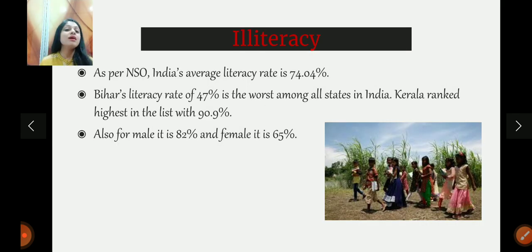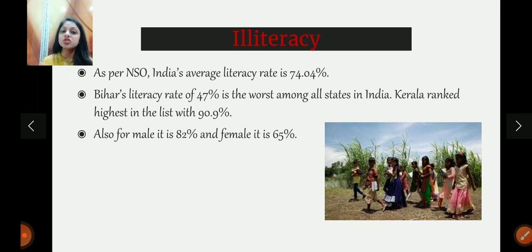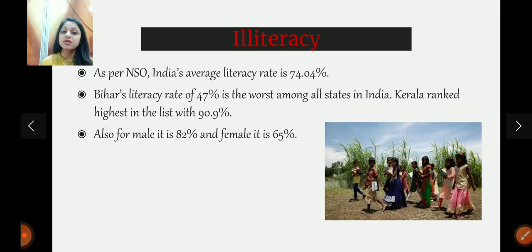Then comes illiteracy. First understand the difference between illiteracy and education. Illiteracy refers to the capability to read and write — this is the very basic necessity that almost every person should have. India's average literacy rate is 74%, meaning 74% of the population can read and write. That also means 26% of the population cannot even read and write, which is not a good thing. Moreover, within that 74%, there are significant variations. For example, interstate variations: Bihar's literacy rate is 47%, while Kerala's is 90%. There are also gender variations — the male literacy rate is 82% while the female literacy rate is 65%. This is not a good picture, as a considerable number of people cannot even read and write.